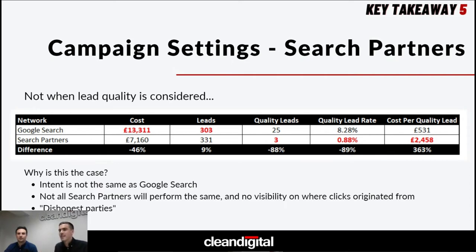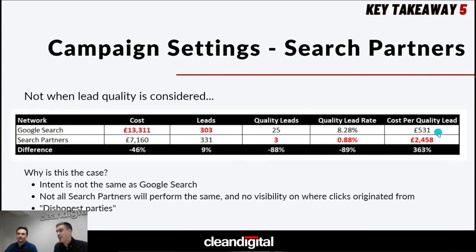A lead is only as good as the quality of that lead. In this example: Google Search is more costly with fewer leads, but looking at quality leads — where a quality lead converts to a sale when someone has provided a lot of information and looks ready to buy — Google Search had 25 quality leads versus 3 on Search Partners. The quality lead rate is 8% for Google Search versus less than 1% for Search Partners — ten times worse for Search Partners. When it comes to cost per quality lead rather than cost per lead, Search Partners is five times higher.